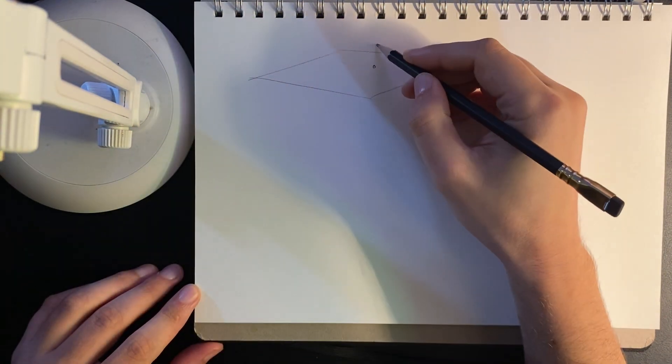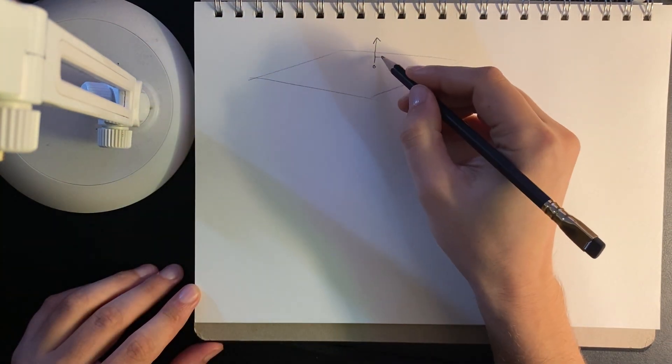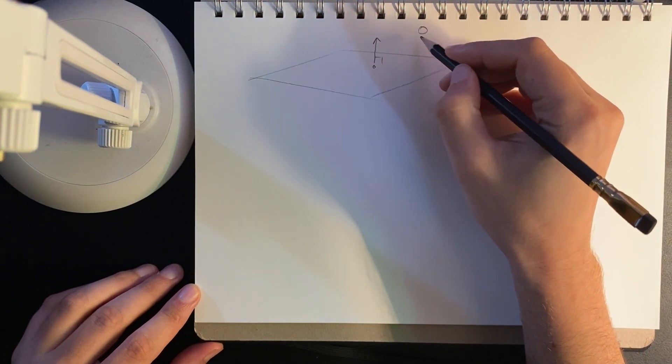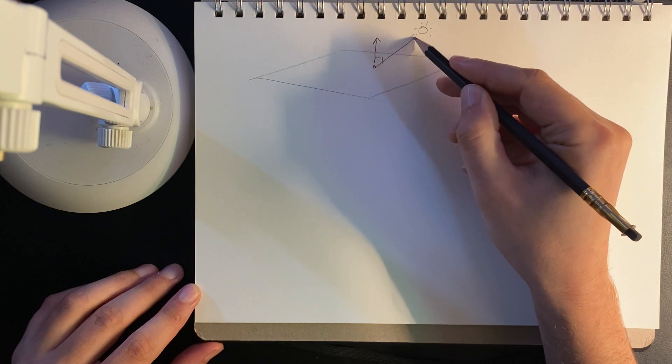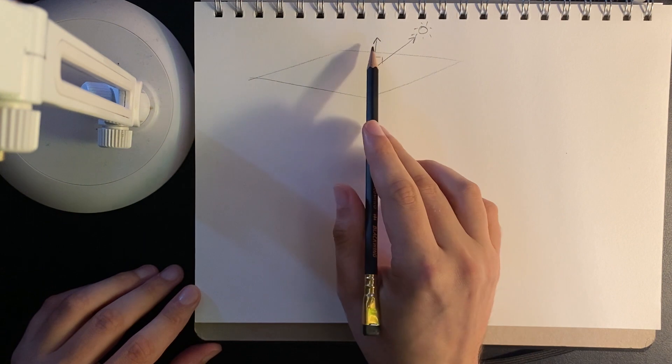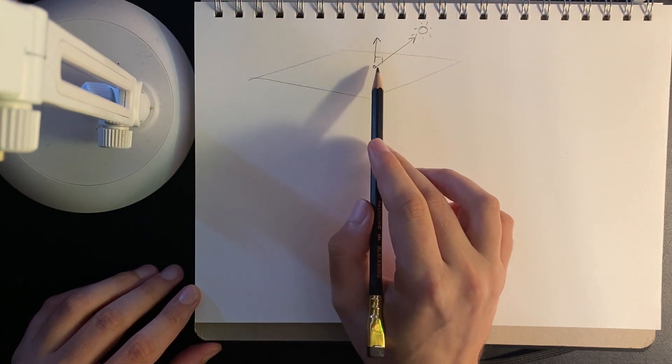So we have a point, we have a normal, which is the direction perpendicular to the surface, we have a light, and what we want to get is we imagine going from the point to the light. We want to measure how parallel that is with the normal direction.